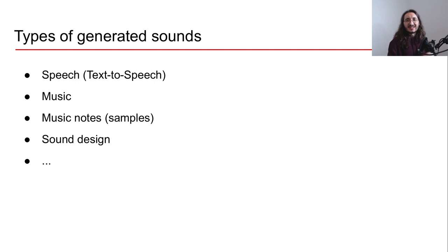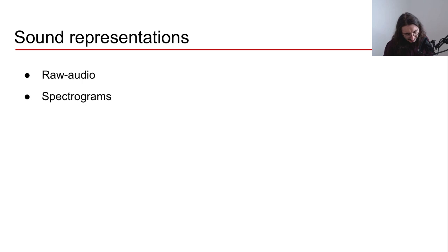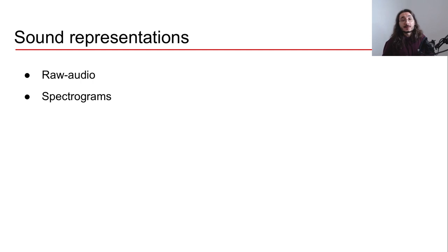Now let's move to what I think is the most interesting question: the features used to train generative models, or equivalently, the different types of sound representations. We mainly have two options: raw audio and spectrograms. Let's take a look at each in detail.